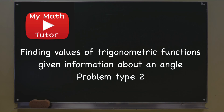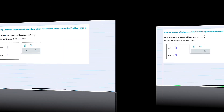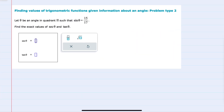In this video I'll be helping you with the Alex problem type called finding values of trigonometric functions given information about an angle, problem type 2. In this example we're told that theta is in quadrant 2, that the sine of theta is 15 over 17, and we're asked to find the secant of theta and the tangent of theta.